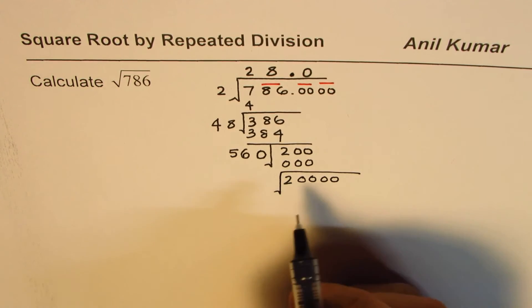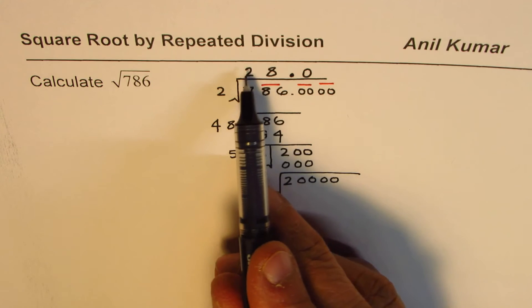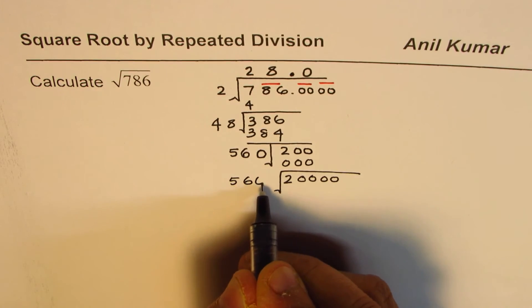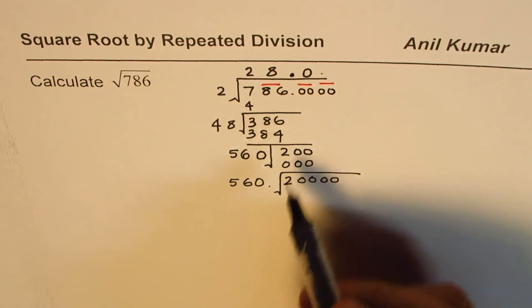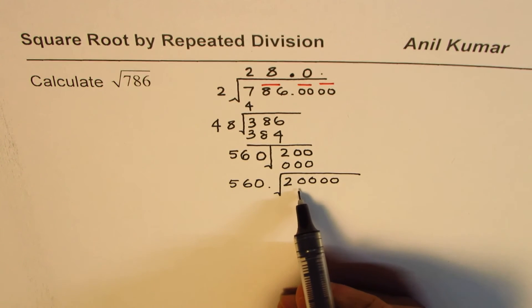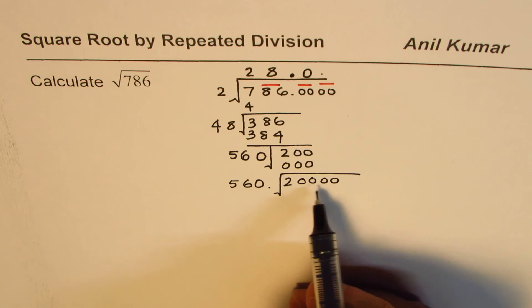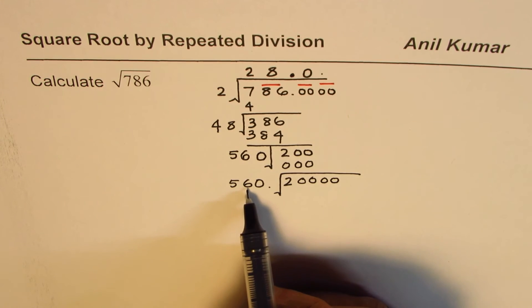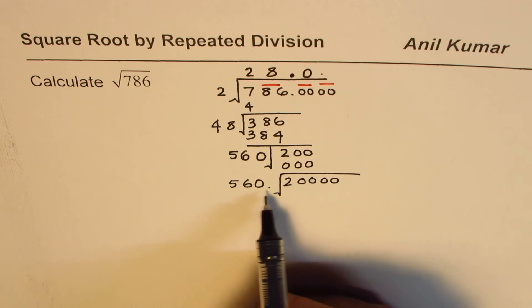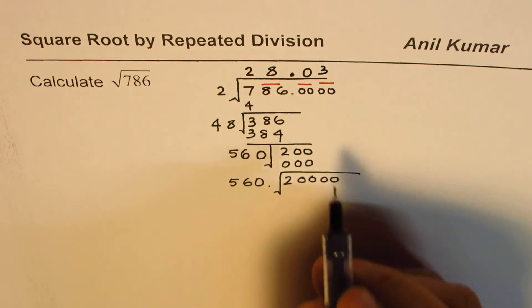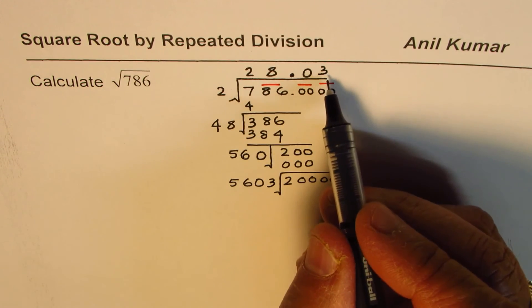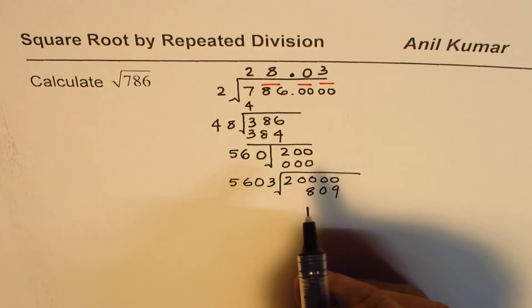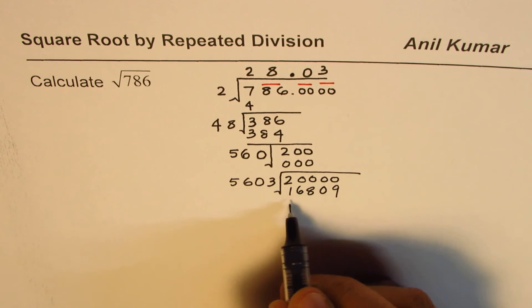Then we need to divide by twice the number which we have on top. This number is 5, 6, 0. Then we have to write a number which could go into 20,000. 5 times 4 is 20. 6 times 4 would be 24, so that would make it bigger. So we can try the number 3. Let's divide: 3 times 3 is 9, 3 times 0 is 0, 3 times 6 is 18 plus 1 is 19, 3 times 5 is 15 plus 1 is 16.